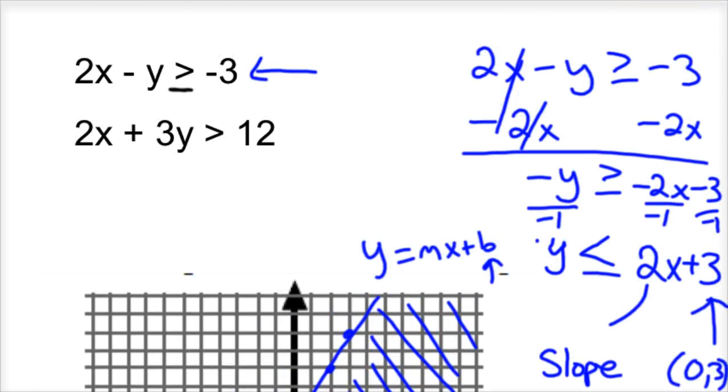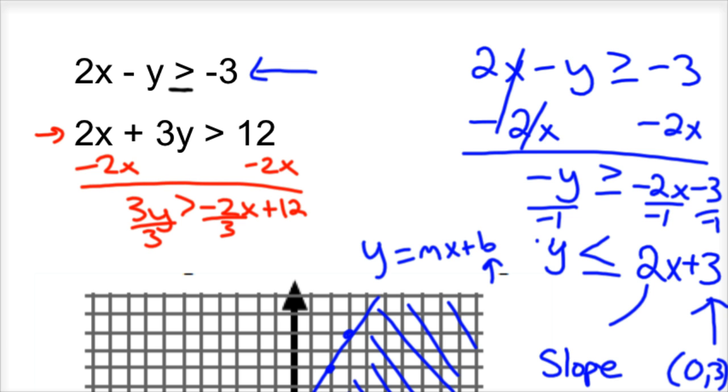So, now the bottom one I'll do in red. And we'll do the same thing. So, we'll go ahead and solve this equation for y. So, you subtract 2x, subtract 2x. And so, 3y is greater than negative 2x plus 12. Then you divide everything by 3. And so, y is greater than negative 2 thirds x plus 4.